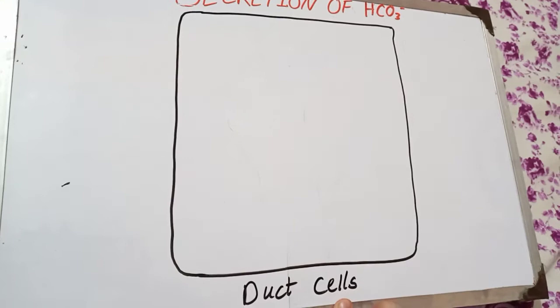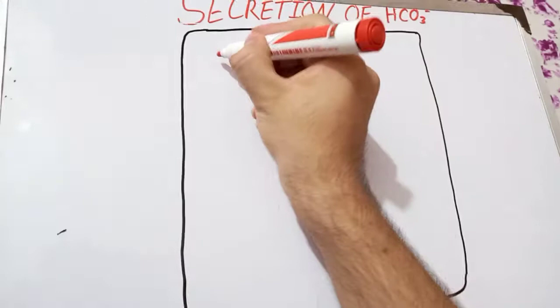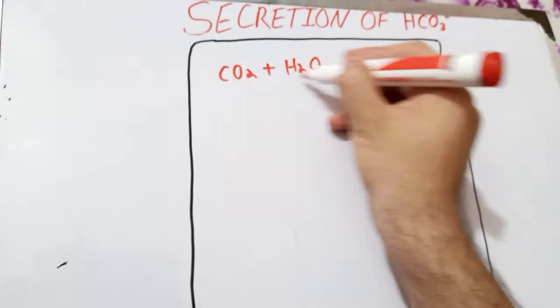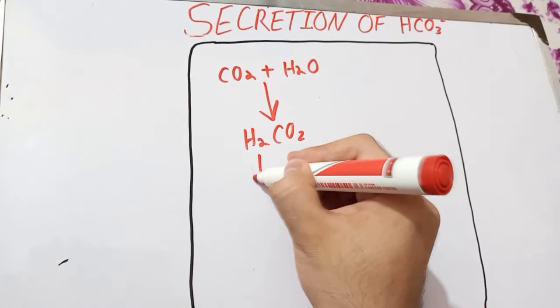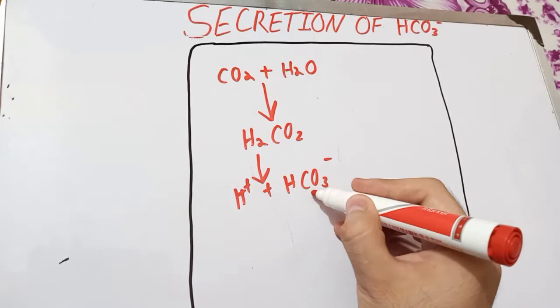First of all, we all know that in every cell of the body there is carbon dioxide and water. These two molecules combine to form carbonic acid, which in turn dissociates into hydrogen ions and bicarbonate ions. We will deal with the bicarbonate ion first and then see what will happen to the hydrogen ion.